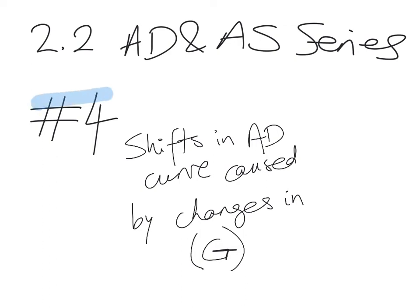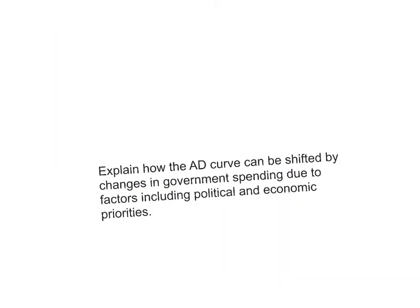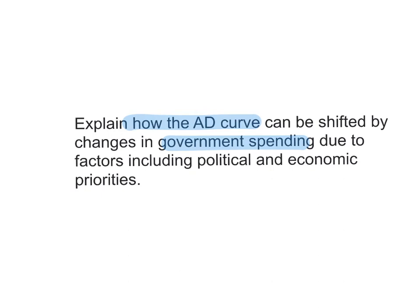This is the fourth video in the Aggregate Demand and Aggregate Supply series, which is Unit 2.2 of the IB Macroeconomic syllabus. In this video, I will talk about the shifts in aggregate demand that are caused by changes in government spending in the G component of aggregate demand. The learning outcome for this video is to explain how the aggregate demand curve can be shifted by changes in government spending due to factors including political and economic priorities.